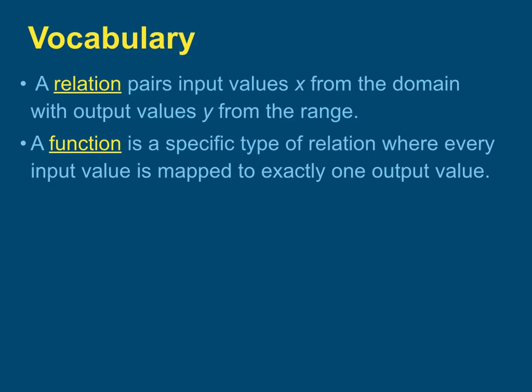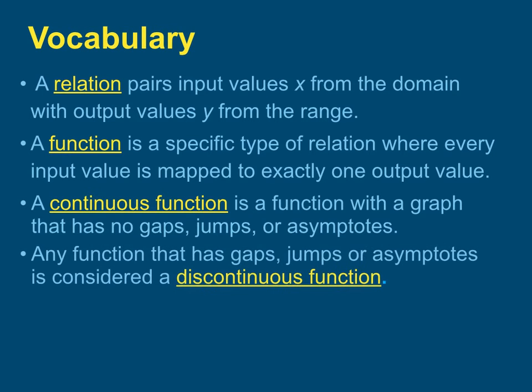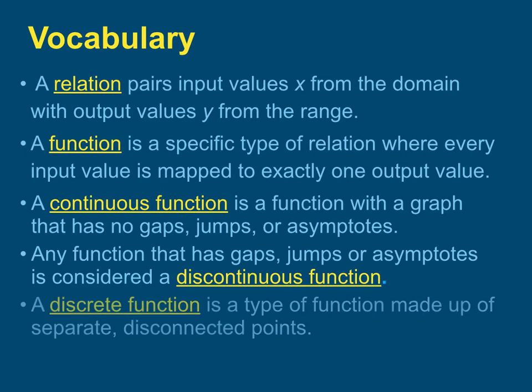There are three types of functions that we will consider in this lesson. A continuous function is a function with a graph that has no gaps, jumps, or asymptotes. Any function that has gaps, jumps, or asymptotes is considered a discontinuous function. And a discrete function is a type of function made up of separate disconnected points.